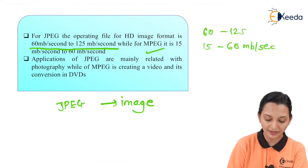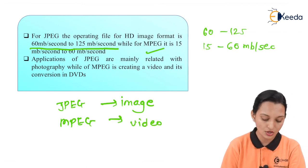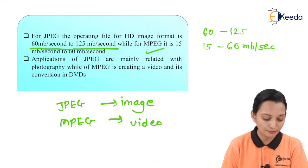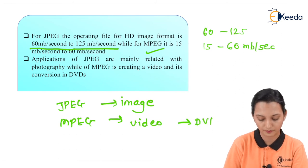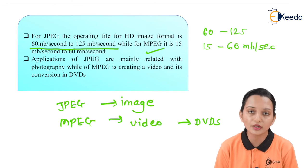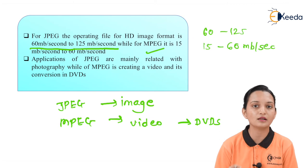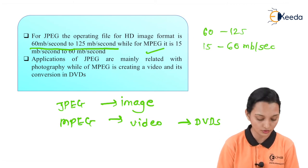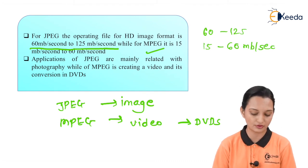MPEG is used for creating video and its conversion to DVDs. With MPEG you can create a video, and one of the best storage options is a DVD. The applications are based on the basic input requirement: for JPEG, the image is the necessary input format and photography is the application; for MPEG, video is the necessary input format and creating or converting video to DVDs is the basic application.